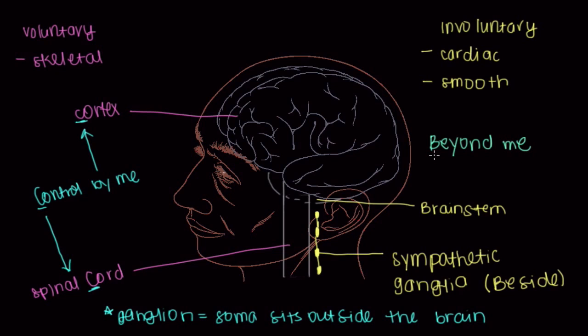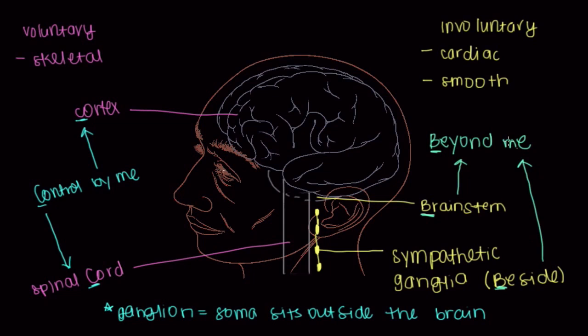And so if it's beyond me, I'm going to have to use either the brainstem, or neuronal tissue that sits beside the spinal cord, in order to be able to cause involuntary contraction of muscle. So great. That's voluntary versus involuntary control.